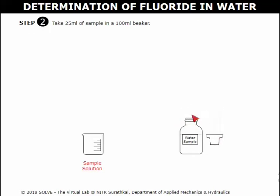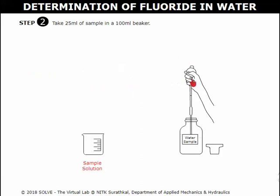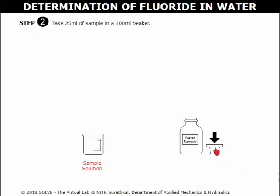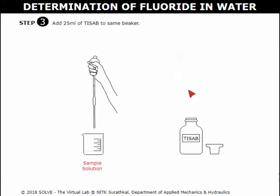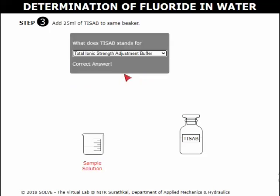Open the lid of the water sample. Click on the pipette to pipette 25 ml of sample and release the sample into the beaker. Click here to open the TISAB bottle and transfer the solution into the beaker. The amount of TISAB taken should be equal to the amount of sample taken, and the total volume should be sufficient to immerse the ISE sensor. Select the correct answer for the pop-up question to proceed to the next step.